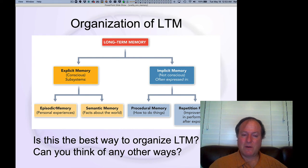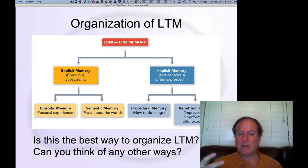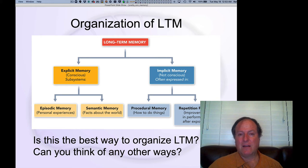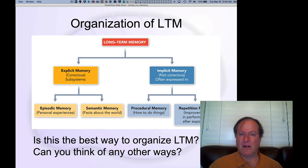In the category of explicit memory we have episodic memory — this notion of subjective first-person experiences — and those are contrasted with semantic memory, which is your explicit declarative ability to declare knowledge about the world, things you can say. The capital of France is Paris. The capital of New York is not New York City, but rather Albany. On the other hand, you have a lot of semantic knowledge that maybe you can't really explain that well.